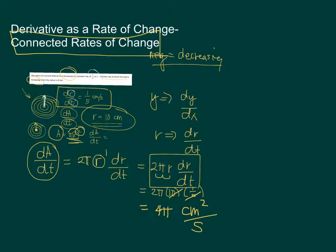Connected rates of change are not limited to circle problems. The key idea is to find a function that relates the given values — for a rectangular area you use length and width, for a triangle you use base and height. Do not limit yourself to circle problems. Whenever a problem mentions a rate that is increasing or decreasing, it's all about derivatives: rate of change in area is dA/dt, rate of change in radius is dr/dt.